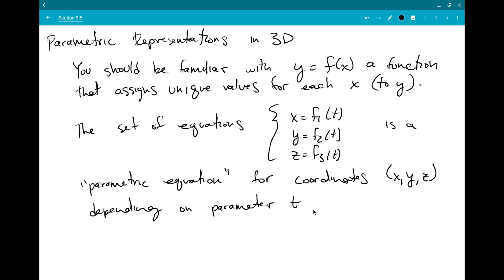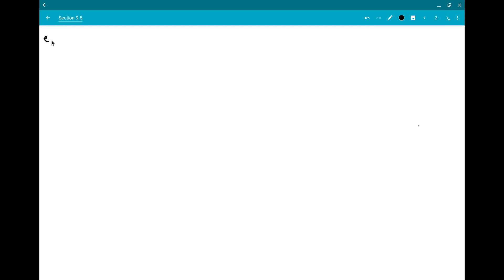And usually you'd say that t has some kind of bounds. Maybe t could be between 0 and 10, and then you would end up with a curve that covers all the points described by those equations. And so if we wanted to go ahead and do an example, this is from example 5 in the textbook.